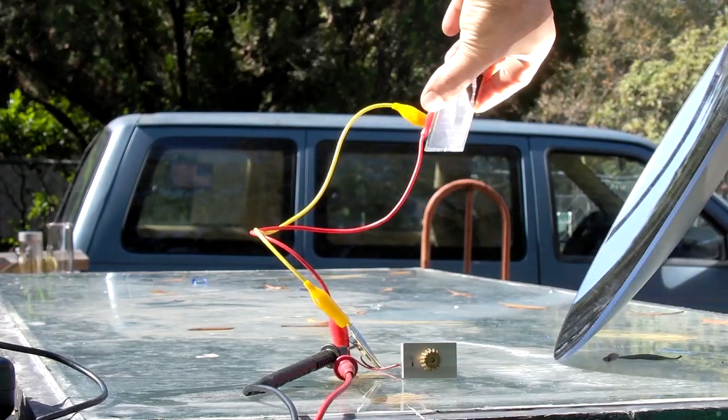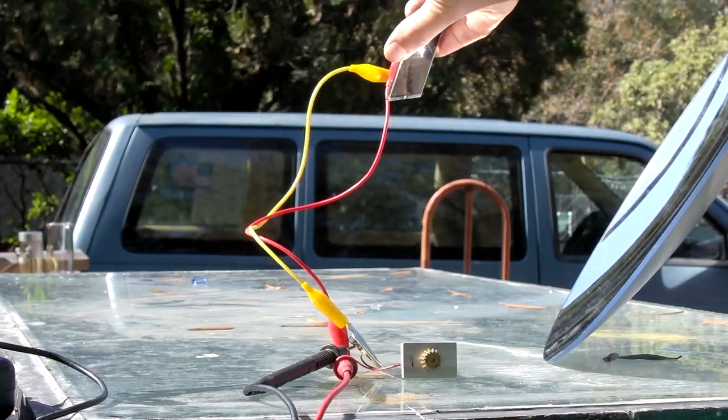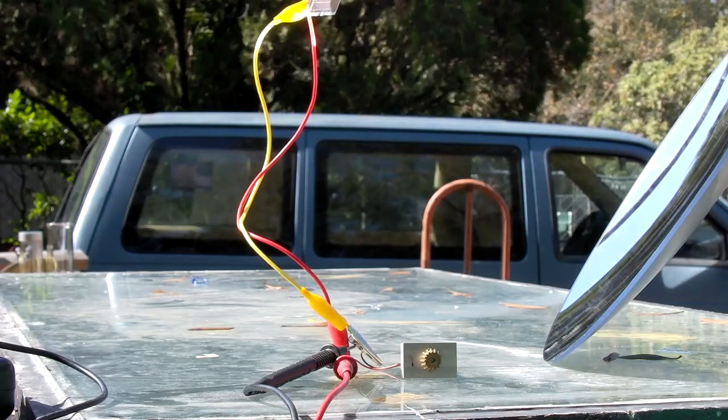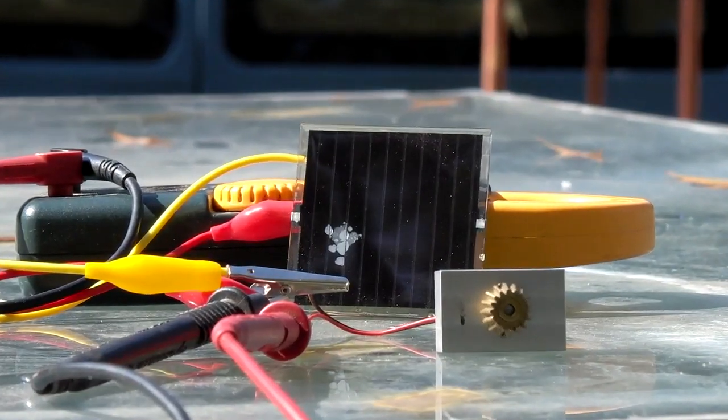The original goal of CPV was to reduce the number of high cost solar modules by utilizing lower cost dish and tracking systems to produce the same amount of power. One issue with concentrated sunlight is heat production.